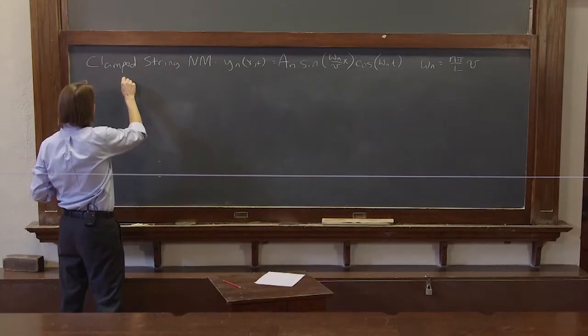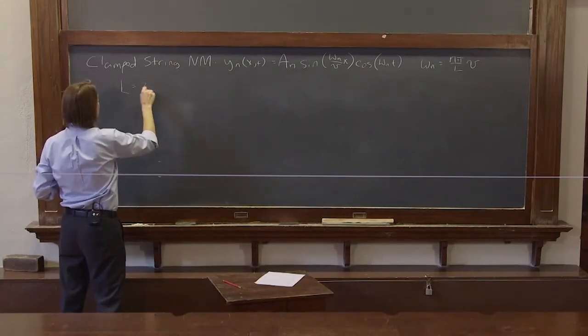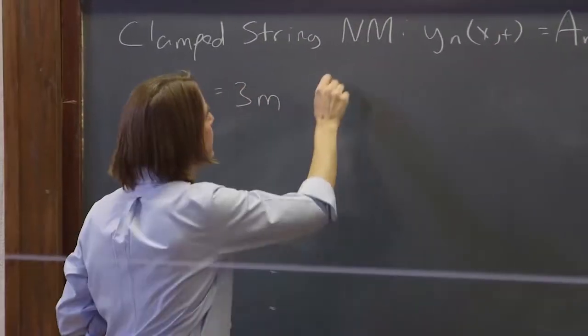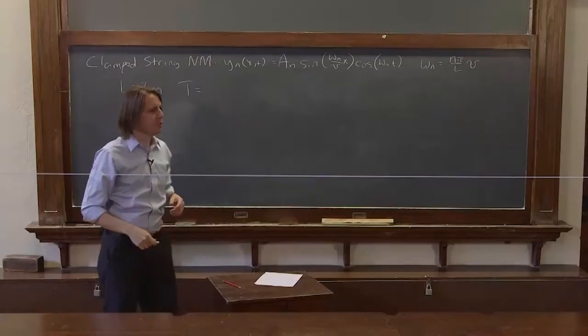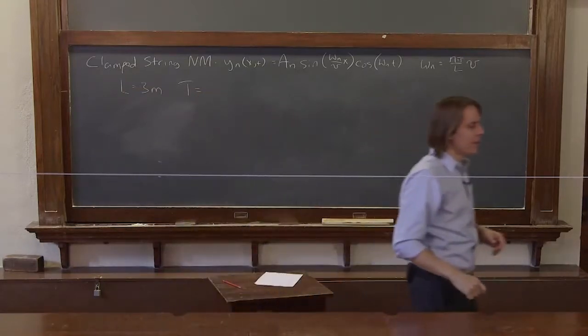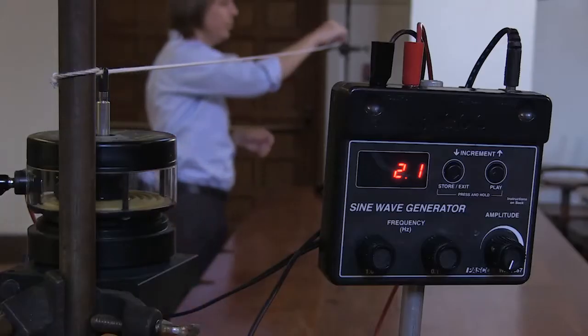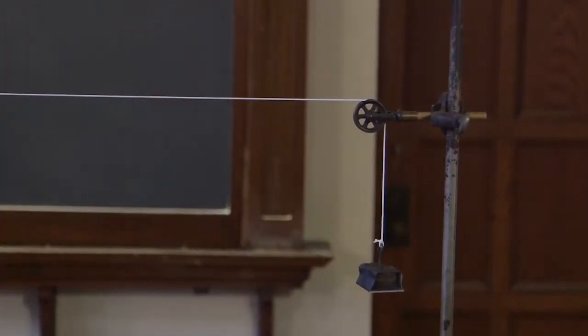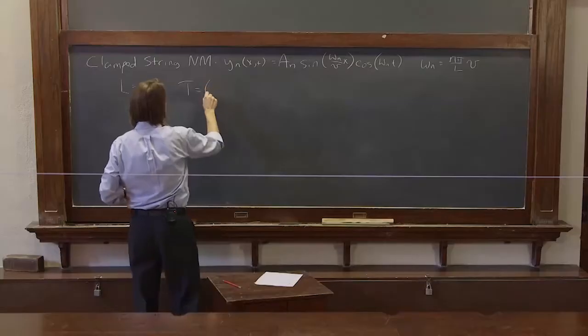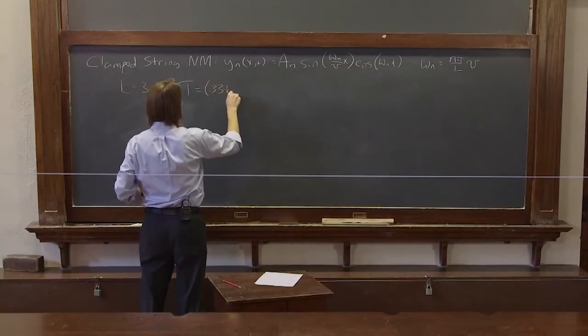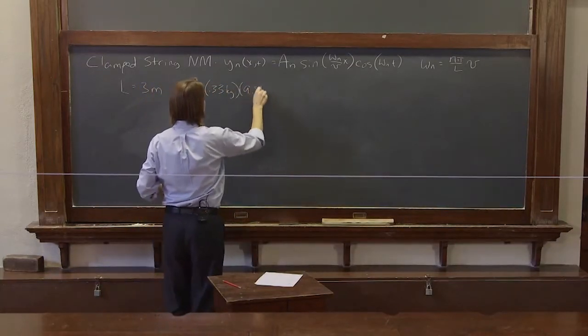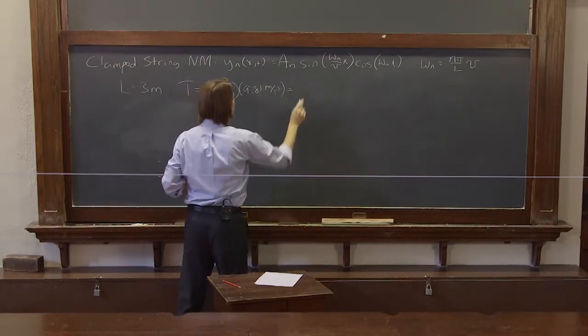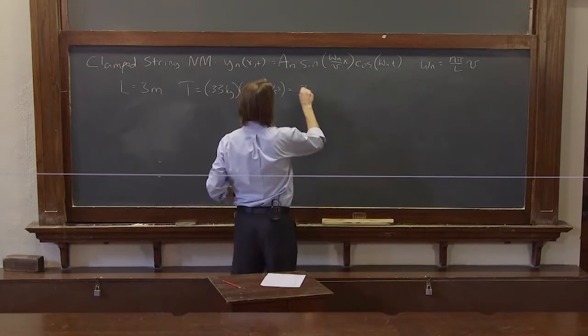The length from one end of the string to the other between the clamps is 3 meters. The tension - you can put a controlled tension in a string by having it end on a little pulley and hanging a weight. So I've got 330 grams here. So the tension is 0.33 kilograms times 9.81 meters per second squared. And that's about 3.2 newtons.